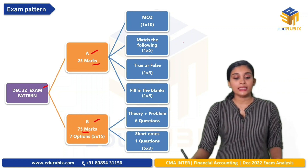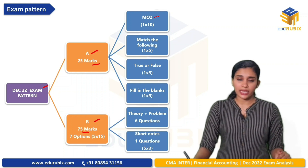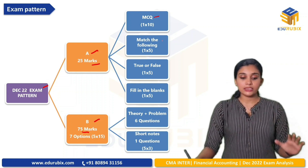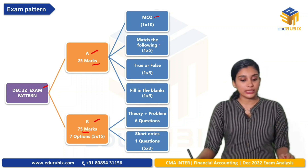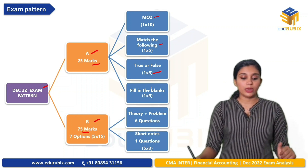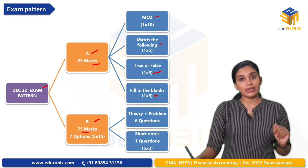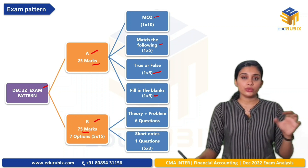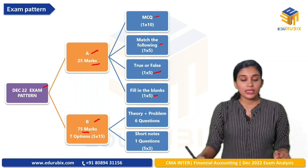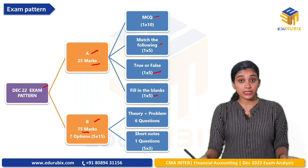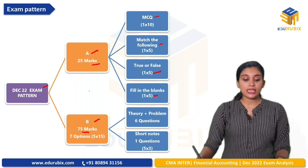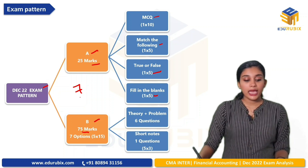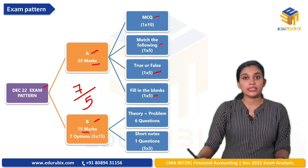In Session A, you will have 10 questions with 4 options and 4 correct options. Then next, 5 marks — you will have matching-type following questions. Next, 5 true or false questions worth 5 marks. Then you will have 5 fill-in-the-blanks questions. In Session B, you have 75 marks — that is where you have seven questions and you need to answer 5 of them.